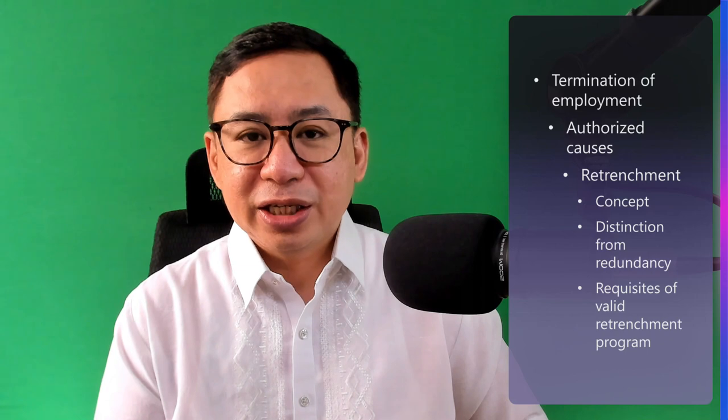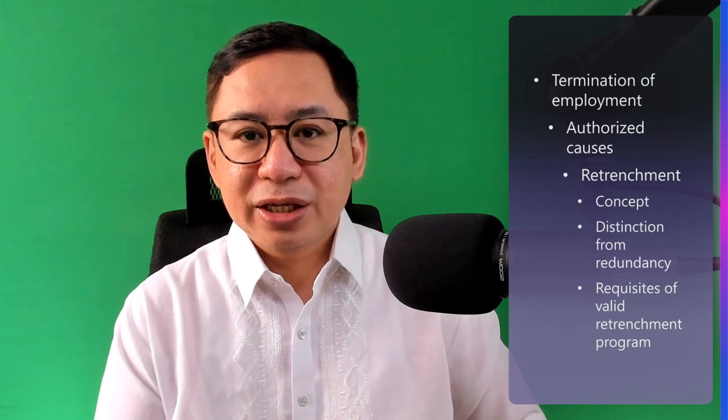Fair and reasonable criteria in ascertaining those who would be dismissed include: number one, efficiency; number two, seniority; number three, physical fitness; number four, age; number five, financial hardship for certain workers; number six, status of employment — that is, temporary, casual, regular, or managerial employees. The employer should first try less drastic means before embarking on retrenchment. The employer should first try other means short of termination of employment, such as: number one, rotation of workers; number two, reduced time; number three, improving manufacturing inefficiencies; number four, trimming manufacturing costs; number five, reducing advertising costs; number six, reduction of bonuses and salaries of management and rank-and-file employees.